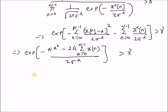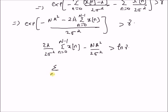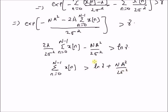Taking the logarithm on both sides, we have (2A / (2*sigma^2)) * sum_{n=0}^{N-1} x(n) minus N*A^2 / (2*sigma^2) is greater than log(gamma). Upon further simplification, this becomes sum_{n=0}^{N-1} x(n) greater than [log(gamma) + N*A^2 / (2*sigma^2)] * (sigma^2 / A).